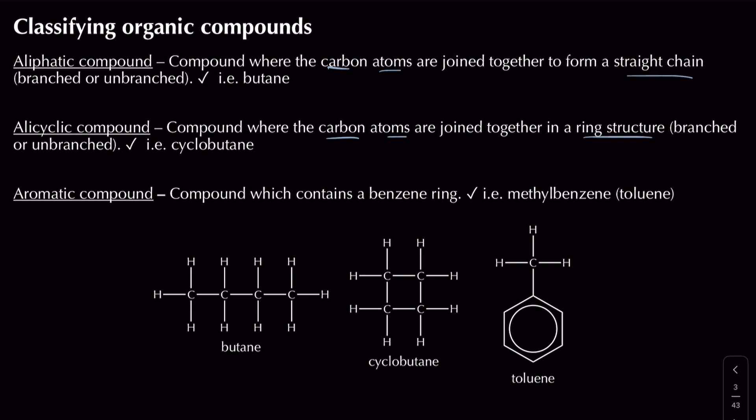An aromatic compound is a compound that contains a benzene ring, which has a special type of chemistry. You can get many different types of aromatic compounds, but you deal with that mainly in year two. We just need to know what an aromatic compound is. For example, methyl benzene — also called toluene — is an aromatic compound because it contains a benzene ring.